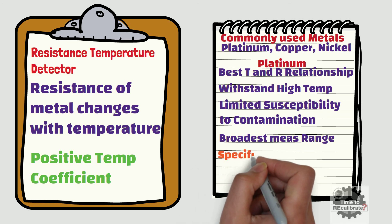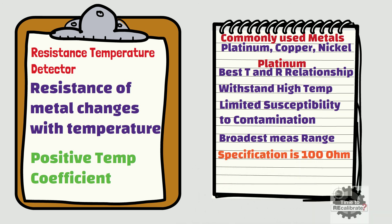The most common RTD specification is 100 ohms, which means that at 0 degrees Celsius the RTD element should demonstrate 100 ohms of resistance.